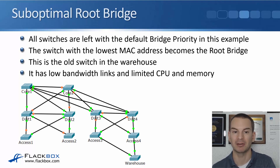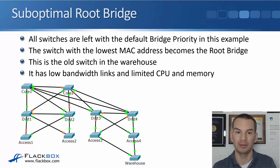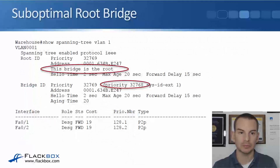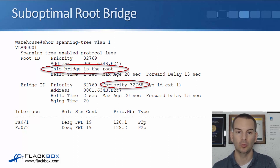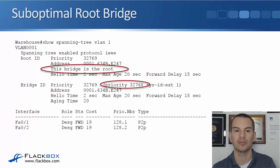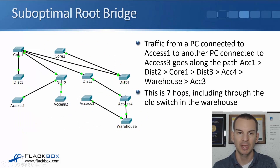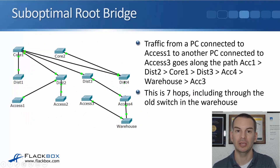That old warehouse switch has got low bandwidth links — maybe fast ethernet compared to gigabit ethernet or better elsewhere — and it's old, so it has limited CPU and memory resources. If we check this, I go onto the warehouse switch and run 'show spanning-tree vlan 1' and I can see that this bridge is the root and the priority is the default of 32768.